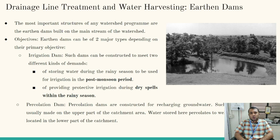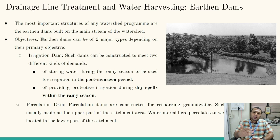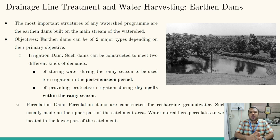In all the previous videos we were discussing about watershed management and various interventions made in ridge line, drainage line, and farm pond. We have reached the end of watershed management. All these arrangements done in the drainage line, farm pond, or ridge area enhance the amount of water stored in our earthen dams. Earthen dams are basically the end point of our watershed management, and serve as the water harvesting structure for the entire watershed area.